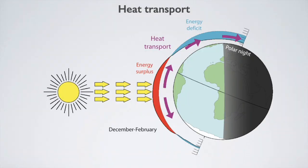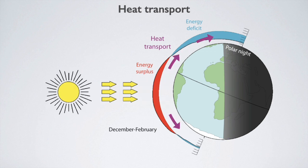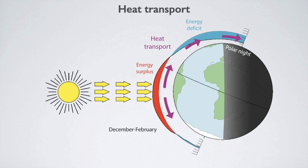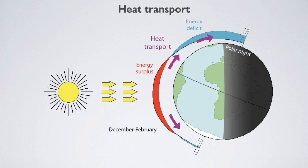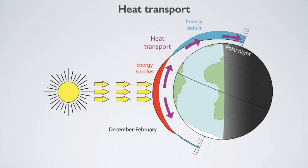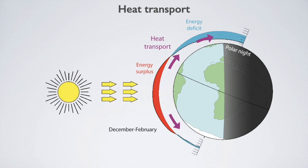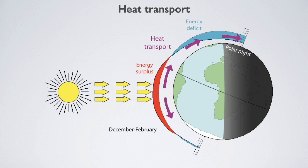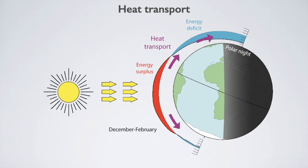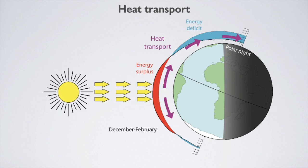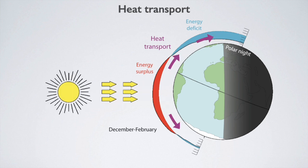What is heat transport? Most of the sun's energy reaches the Earth in the tropics, creating a zone of excess energy that receives more energy than it emits, shown in red in the figure. Outside the tropics, there are two energy deficit zones which receive less energy than they emit, shown in blue. These imbalances should result in continuous warming in the red zone and continuous cooling in the blue zones. That this does not happen is due to the transport of heat, which also transports moisture and clouds, and is very important for the climate.